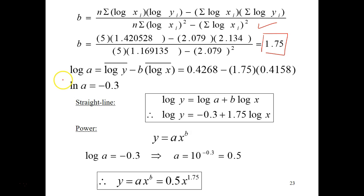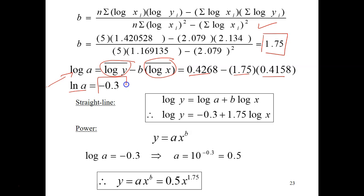Substituting all the values, you will get the slope as 1.75. For the intercept, substitute into the formula: log a equals log y-bar minus b times log x-bar. Substituting all these values, you will get your intercept which is negative 0.3. So now you can substitute log a and b into the linear equation.